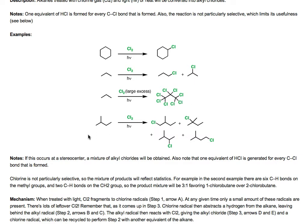Things can get even more complicated with a molecule like 2-methylbutane. How many different types of hydrogens do we have? We actually have four different types: these two methyl groups which are identical for a total of six hydrogens, a CH for one hydrogen, a methylene for two hydrogens, and a terminal methyl group for three hydrogens. So we have four different sites where chlorine could replace a hydrogen, giving four different products in a roughly statistical ratio of six to one to two to three.